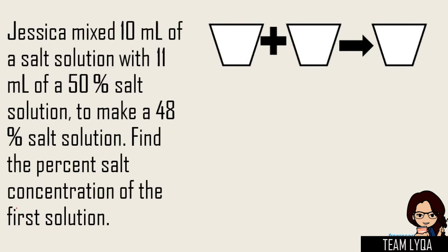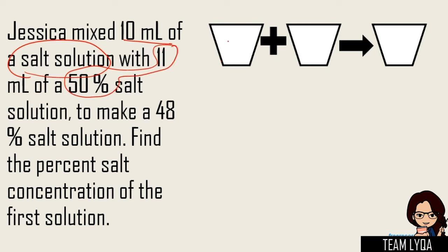Okay, so this is Part 3 — Mixture Problems. This is the first question that we're going to solve. It says: Jessica mixes 10 ml of salt solution with 11 ml of 50% salt solution to make a 48% salt solution. Find the percent salt concentration of the first solution. Itong third part na ito talks about paano kung ang hinahanap is one of the two solutions na hinahalo. Binigay sa atin yung final result, at ang tinatanong kung ano yung percentage — kung ano yung dami ng mga pinaghalo.